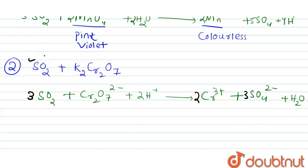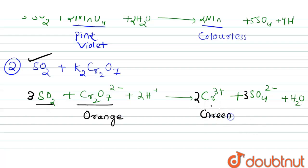How can this reaction be used for the detection of sulfur dioxide? Before the reaction, when Cr₂O₇²⁻ is present in the medium, the color of the solution is orange. But after the reaction with sulfur dioxide, the color changes to green due to the formation of Cr³⁺. So the color changes from orange to green, and this test can be used for the detection of sulfur dioxide.